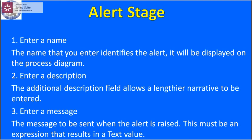In the properties window, first we enter a name — the name that identifies the alert, which will be displayed on the process table. Next we enter a description — the additional description field allows a longer narrative to be entered. Then we enter a message — the message to be sent when the alert is raised, which must be an expression that results in a text value.